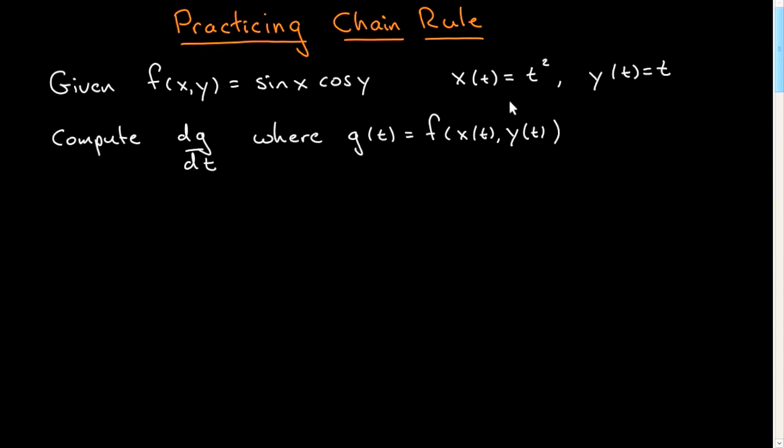So given this kind of situation, we can form a new function, g of t, a real valued function of a single real variable, by composition. So we have f of x of t, y of t. And the question is, then, what is the derivative of g with respect to t?